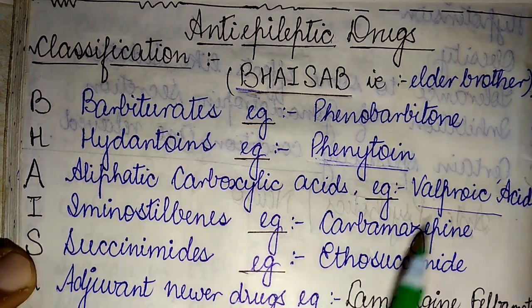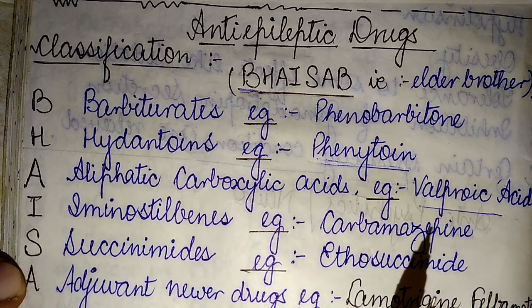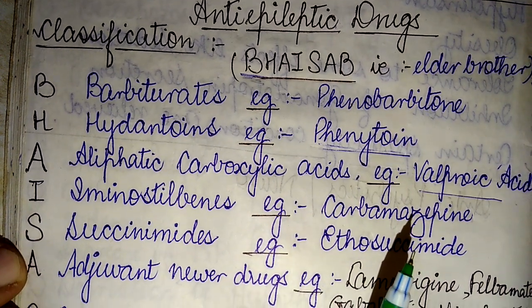I stands for carbamazepine. S stands for the succinimides — example, ethosuximide.